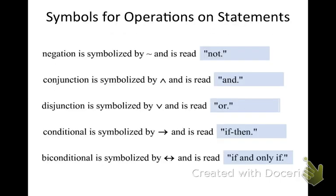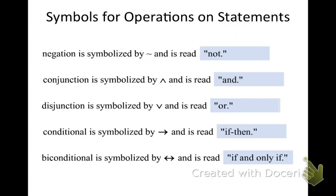So, how do we operate on statements? Here are the symbols you must know. A negation has this symbol — I believe it's called a tilde, a squiggly line — and it means NOT. When you see that, you read NOT. So tilde P means not P. A conjunction is symbolized by an upside-down V, and it is read AND. Whenever you see this symbol, you're going to say AND.